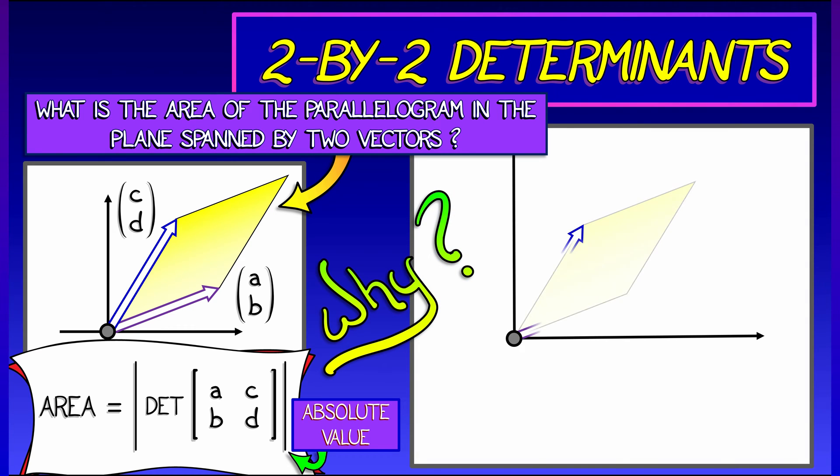Well, we can prove that with a little bit of geometry. That might be kind of fun. Let's take those two vectors, the parallelogram that they span, and put that inside of a bounding box, a rectangle in the plane.